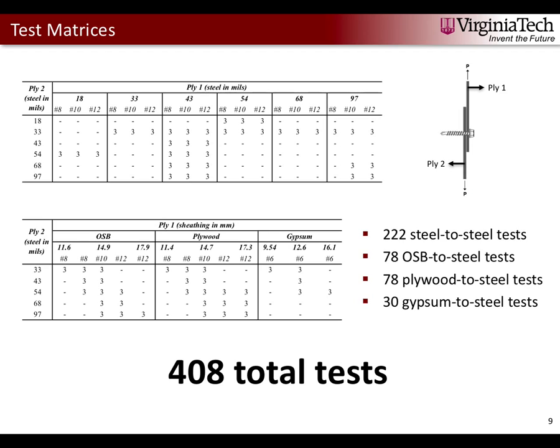For the sheathing tests we used three different types of sheathing: oriented strand board (OSB), structural one plywood, and paper-laminated gypsum, with three different thicknesses for each. We varied five different steel ply thicknesses and three fasteners for the OSB and plywood, and just one for the gypsum. This came out to 78 OSB tests, 78 plywood tests, and 30 gypsum tests — a grand total of 408 tests.